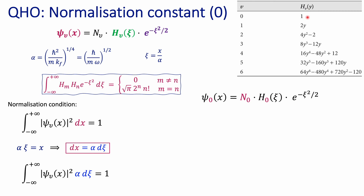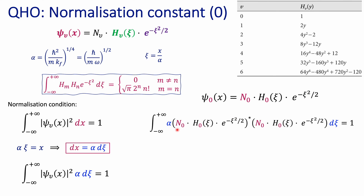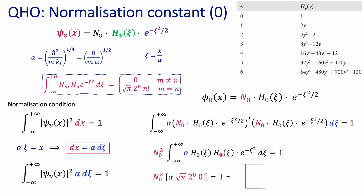For the ground state, where the principal quantum number is 0, the Hermite polynomial equals 1. This gives the normalization constant associated with the ground state, and the Gaussian function is expressed in terms of the reduced coordinate chi. The probability density is the complex conjugate of the wave function times the wave function. After all substitutions with α dχ, the integral is expressed in terms of the square root of pi — for n=0, it's the square root of pi.